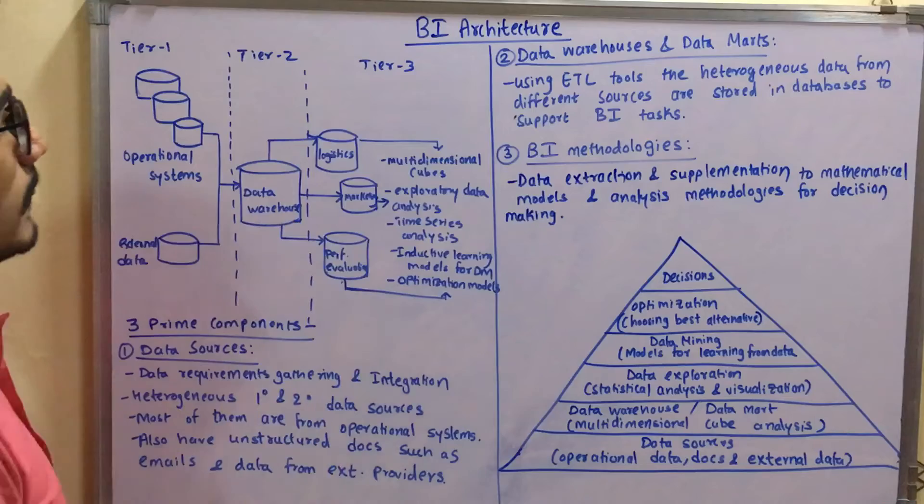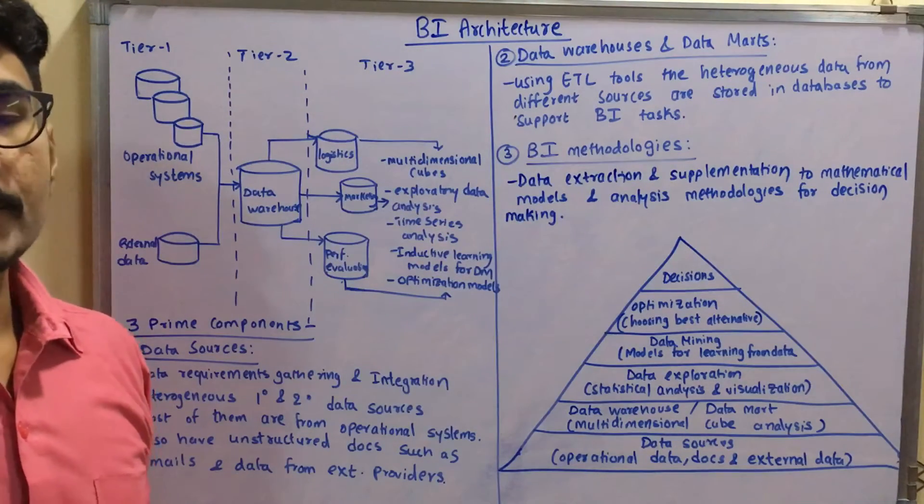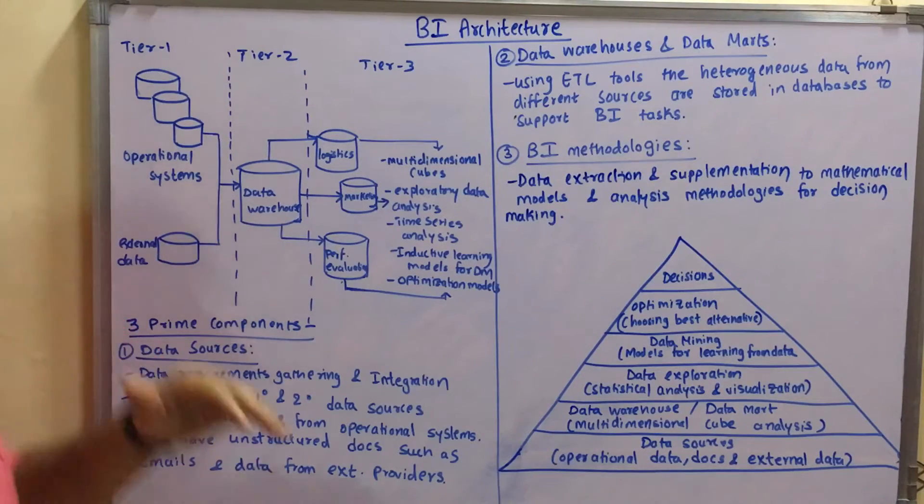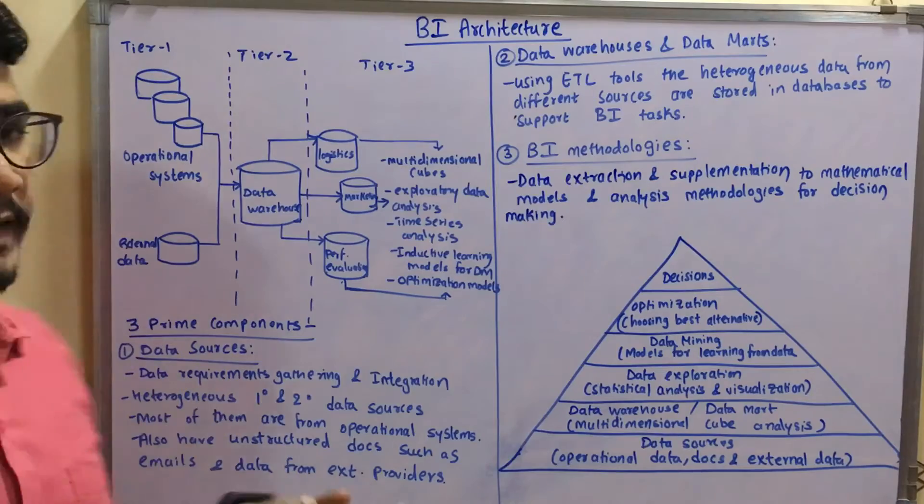In Tier 2 we have the data warehouse which stores a unique or unified schema throughout. And then in Tier 3 we have different individual transactional databases like logistics, marketing, then performance evaluation. So we'll have a look on them one by one.